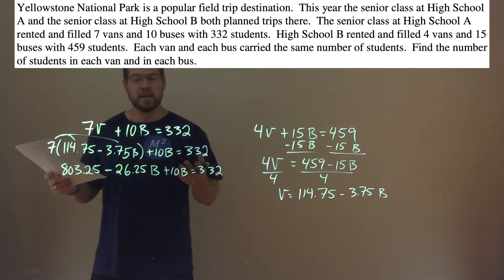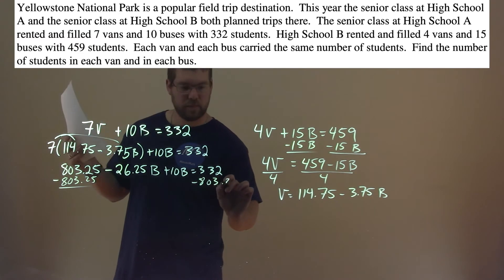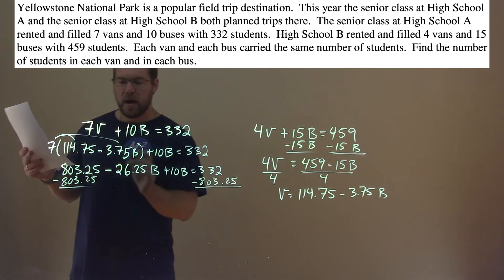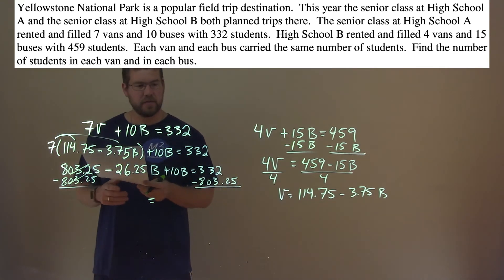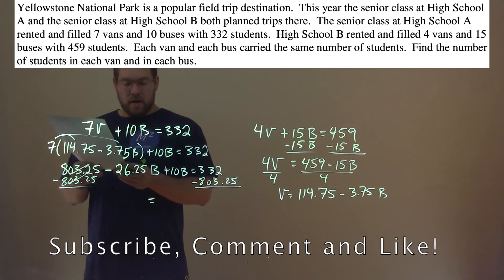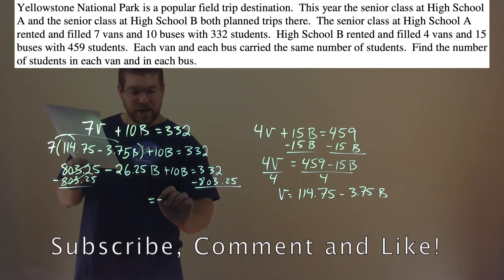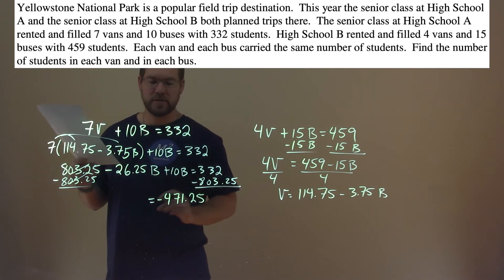Now we can combine our like terms. We subtract 803.25 from both sides, and that cancels out here. And we're left with on the right, 332 minus 803, which comes out to be a negative 471.25.